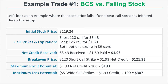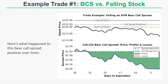Let's see how this position performed. The stock price starts right around $120 — we're short the 120 call and long the 125 call with a break-even of $121.93. As time passes, the stock price decreases, briefly returns near 120, then ultimately ends up below $115 at expiration. As the stock price decreases, the bear call spread's value also decreases.